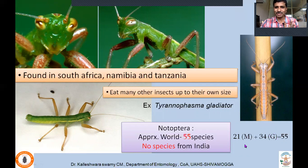Both Mantophasmatodea and Grylloblattodea have lost their order status. Previously, Mantophasmatodea was considered the smallest order (with fewest species), and before that, Grylloblattodea held that distinction. Now neither is an order. There are no species of Notoptera described from India.